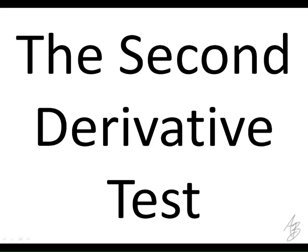The second derivative test is an alternative way of doing that. When we're finding local extrema, we're not going to forget about those critical points. The critical points are the potential extrema — the only points that can be an extreme. So we're going to use the first derivative to find those critical points, but then we're going to use the second derivative at those critical points to determine whether that point is a minimum, maximum, or neither.